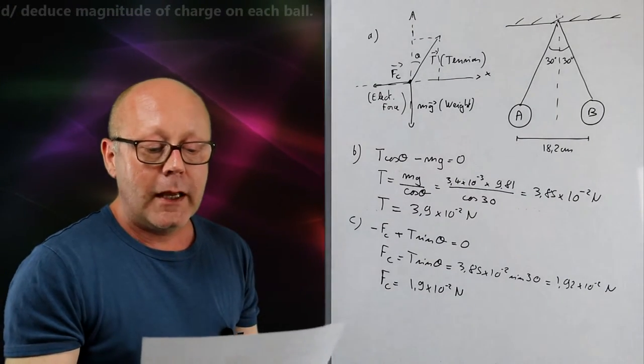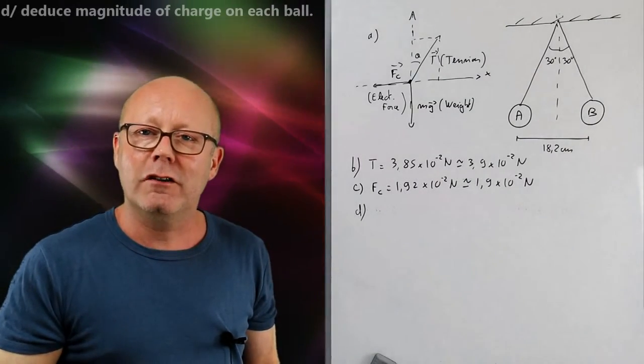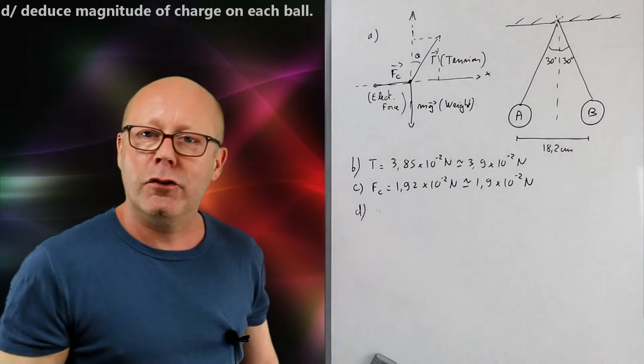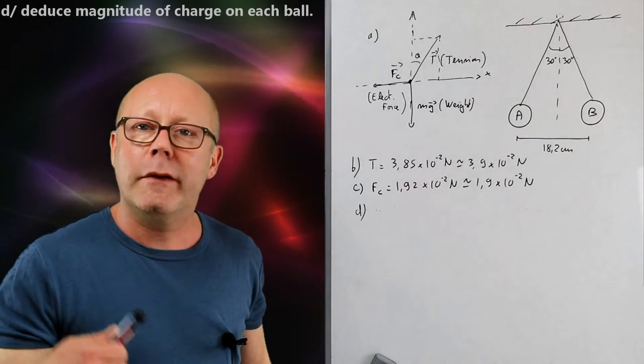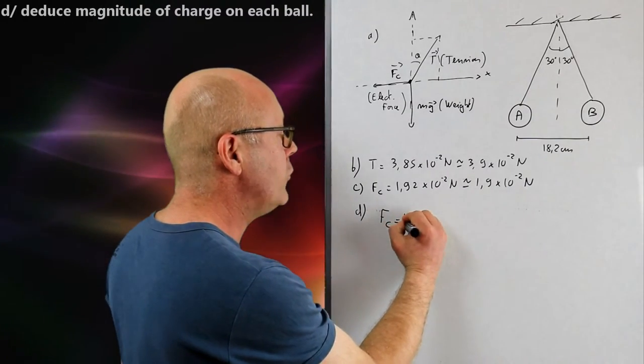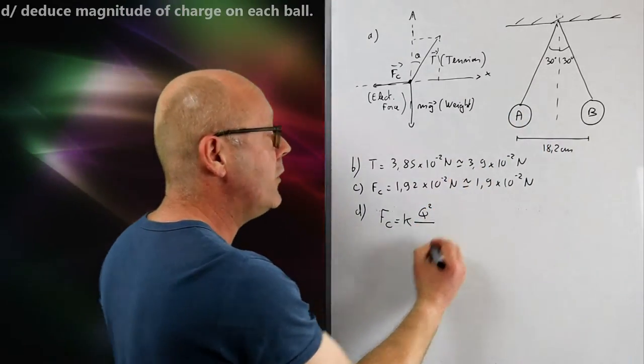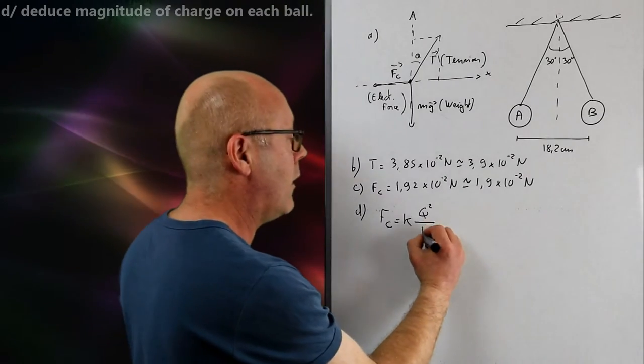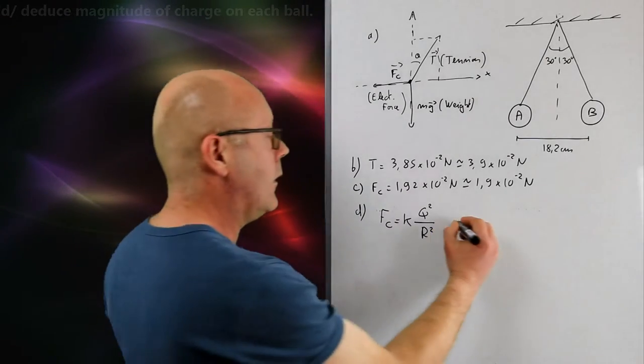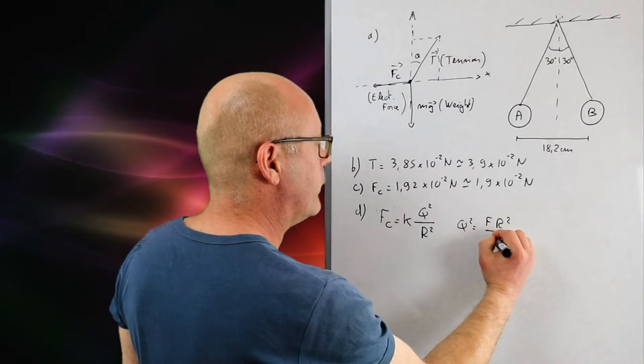Question D. To find the magnitude of the charge on each ball. To find the magnitude of the charge, I can use the fact that I already know the Coulomb force. It's 1.9 by 10 to the minus 2 newtons. And I know that the Coulomb force can be expressed as function of the charges. The Coulomb force is proportional to the product of the charges. So here it's the same charge, so it's Q squared. And it's inversely proportional to the square of the distance between them, R squared, R being this value. Now to find Q, I just need to rearrange this. So I get Q squared equals F R squared over K.